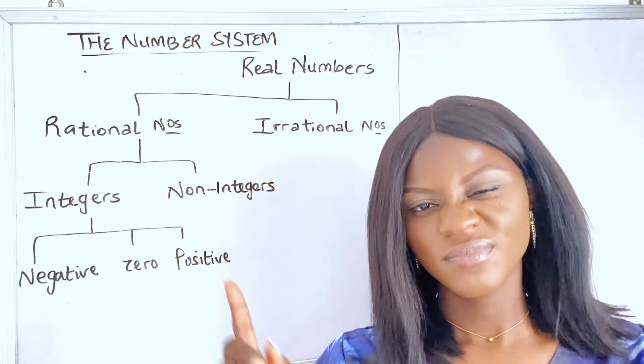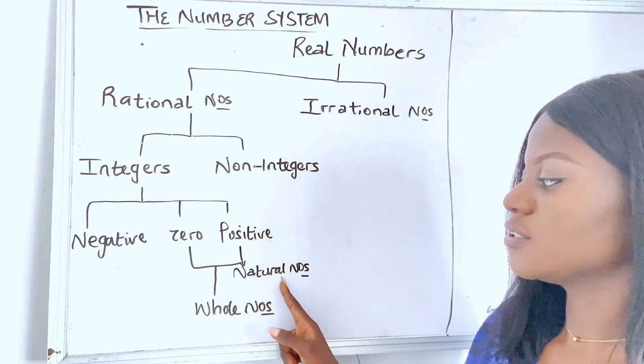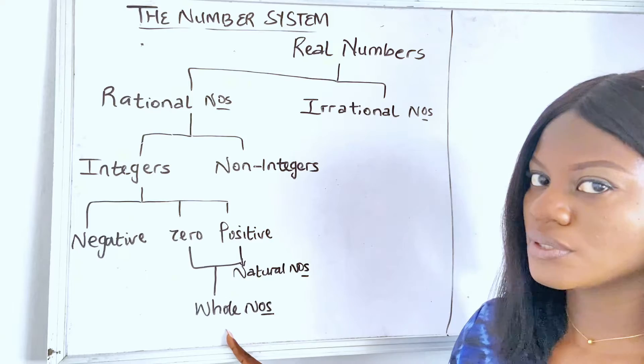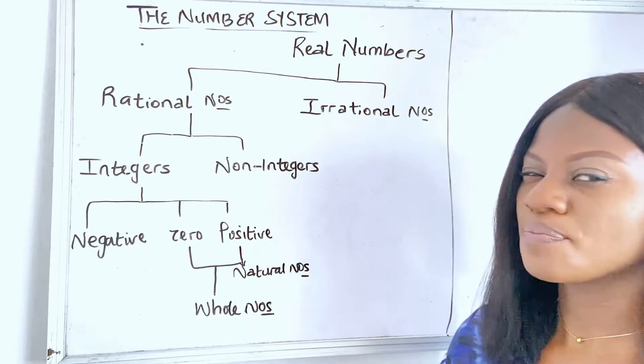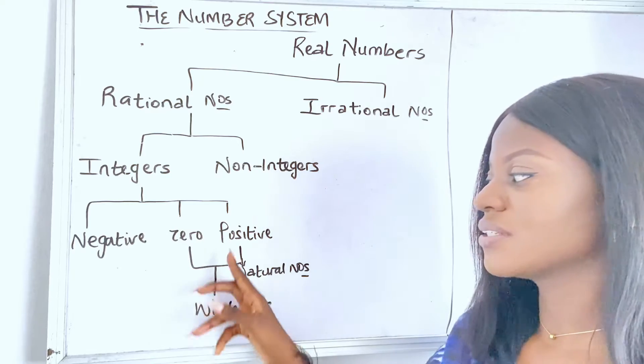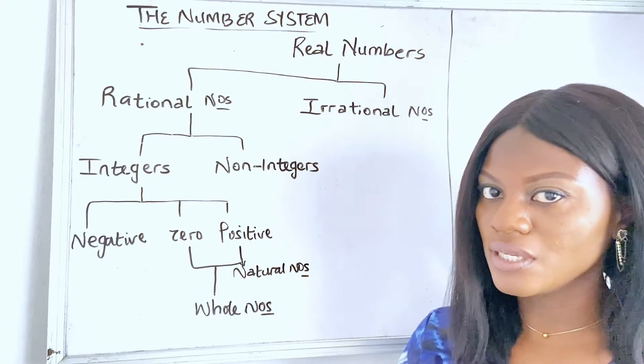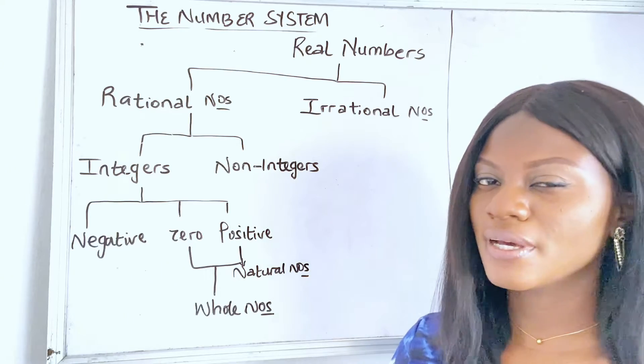Now, to make more sense of it, let's do something. So, if you notice, I added what we have as the natural numbers and whole numbers, right? So, natural numbers are positive numbers without the digit zero. But whole numbers are positive numbers including zero. Now, let's do something so it can make more sense.